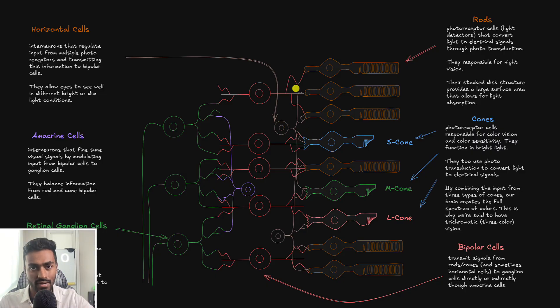Now, there are also interneurons, that is the horizontal cells as well as the amacrine cells. So these horizontal cells, they help connect and modulate information from different photoreceptors into the bipolar cell. And these amacrine cells will modulate information from different bipolar cells to the ganglion cells. And they allow our eyes to see well or adjust well to different lighting conditions.